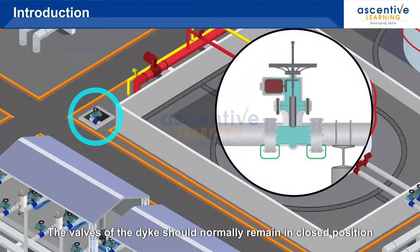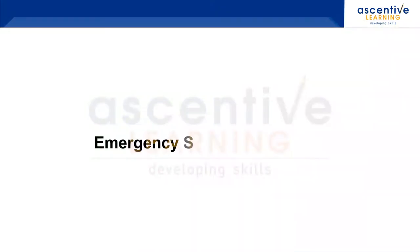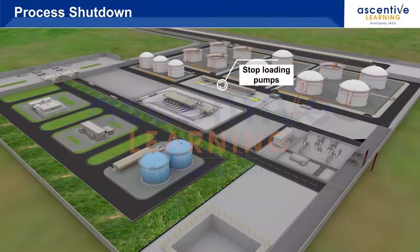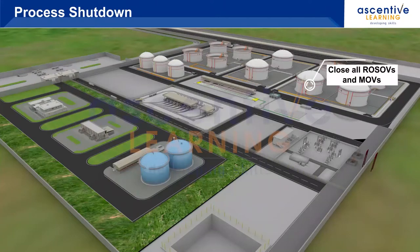The valves of the dike should normally remain in the closed position. Process shutdown should initiate stopping of processes in a safe and controlled manner, such as stopping loading pumps and closing all ROSOVs and MOVs.